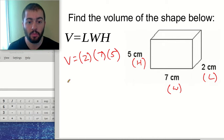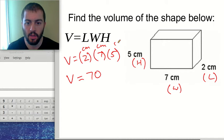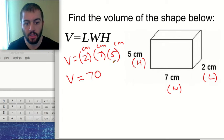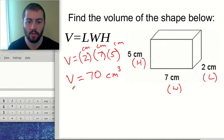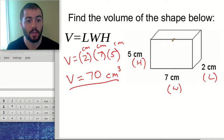Times the height, which we defined as five centimeters. If we go ahead and multiply all these numbers together, we should end up with a volume of 70. Our units — we had centimeters for each dimension, so our units would be centimeters times centimeters times centimeters, or centimeters cubed. So your final answer here should be 70 centimeters cubed. We just take the length times the width times the height.